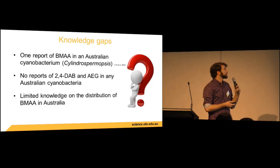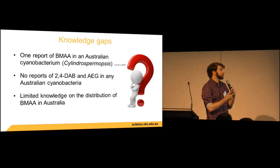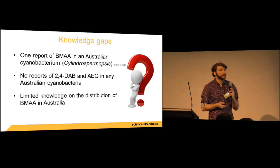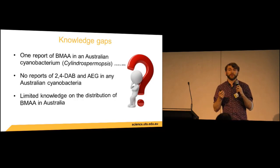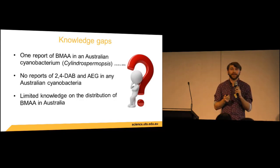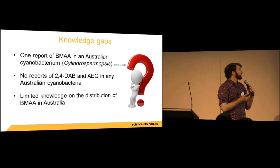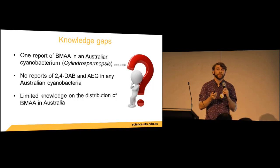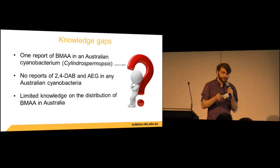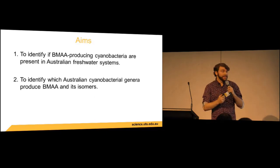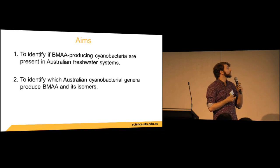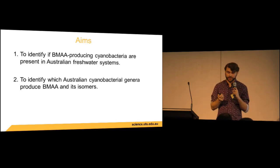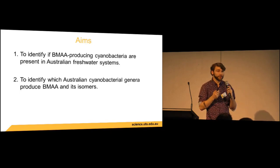What don't we know about BMAA in Australia? There's only been one report of BMAA in an Australian cyanobacterium — Cylindrospermopsis, from Cox et al. 2003 — examining cultures from around the world. There have been no reports of 2,4-DAB or AEG in any Australian cyanobacteria, and the Maine et al. study is the only study to have examined BMAA in Australia's environment. So we don't really know how truly distributed it is. Based on this, I constructed two aims: to identify if BMAA-producing cyanobacteria are present in Australian freshwater systems, and to identify which cyanobacteria genera are able to produce BMAA and its isomers.